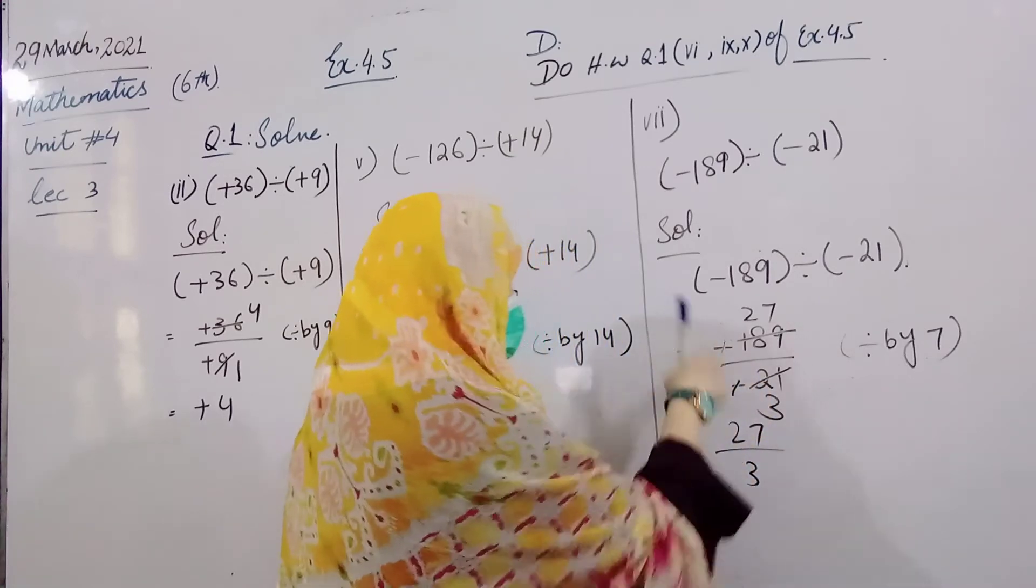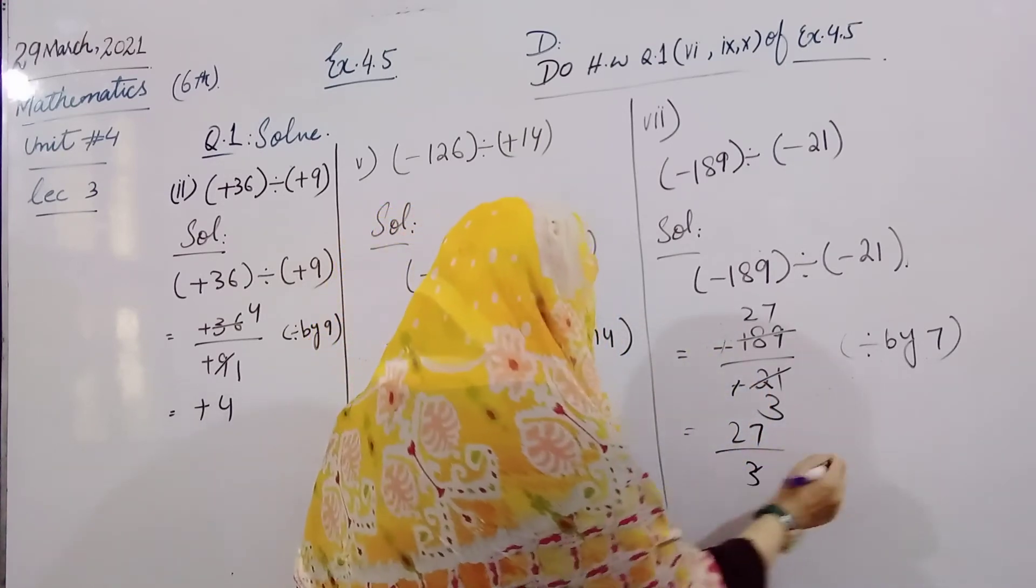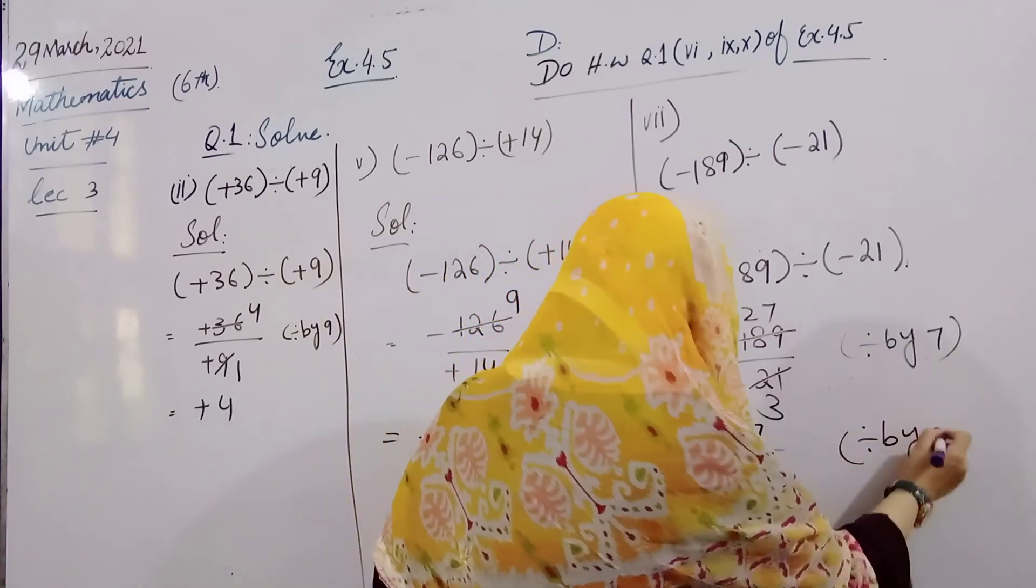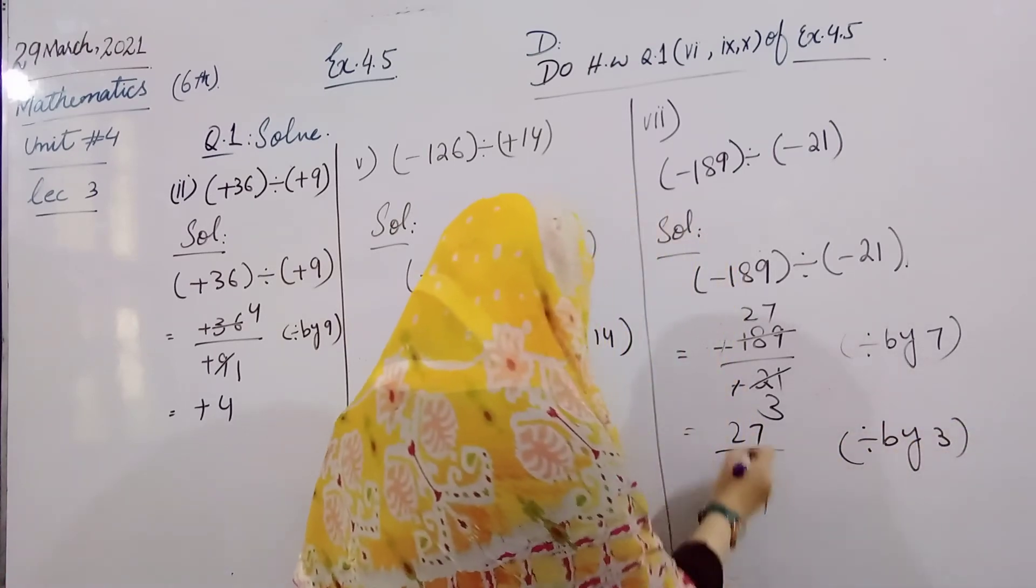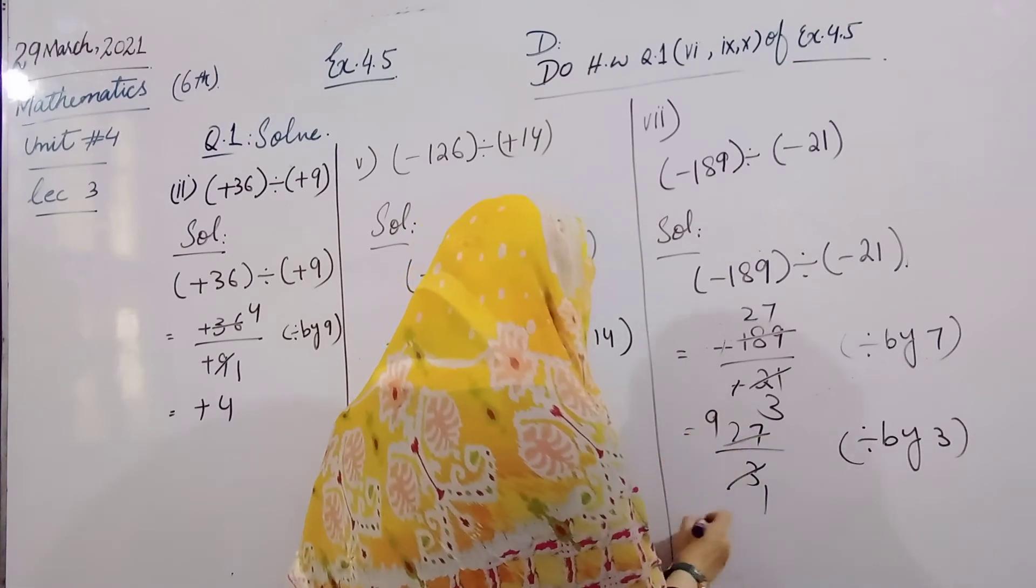Minus minus, minus cutting ho gaya, plus ho gaya, 3. Now here we will divide by 3. 3 ones are 3, and 3 nines are 27.